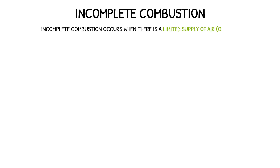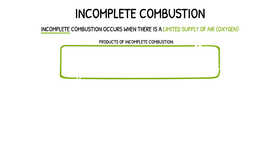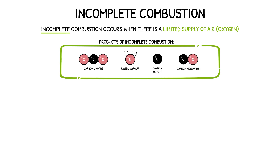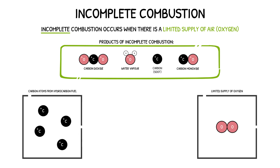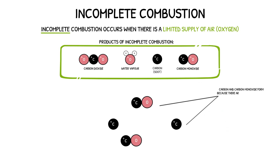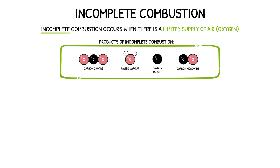A different reaction occurs when there is a limited supply of oxygen available for the fuel to burn in. This reaction is called incomplete combustion. The products of this reaction are not just limited to carbon dioxide and water vapour — this time the reaction may also produce carbon or soot and carbon monoxide. These products are formed because there are not enough oxygen atoms present to form carbon dioxide. When writing equations for the incomplete combustion of a fuel, it's important you read the question properly to identify which products are formed.